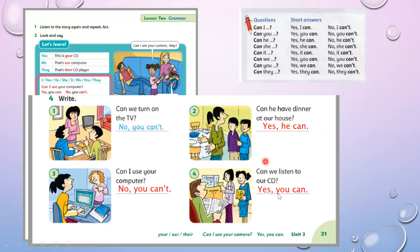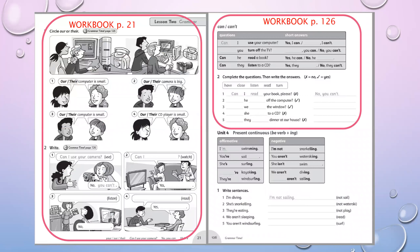The home task — домашнє завдання на наступний урок. Workbook, page 21. Exercise 1 and Exercise 2. Exercise 1: 'our' or 'their' — підкреслити, обвести. 'Our computer is small' or 'Their computer is small' — нам потрібно подивитися на малюнок. Their computer is small — їхній комп'ютер маленький. Our computer is big — наш комп'ютер великий. Our or their camera is big — це все побудовано на картинці: ви роздивляєтесь картинку і відповідно вибираєте our або their.